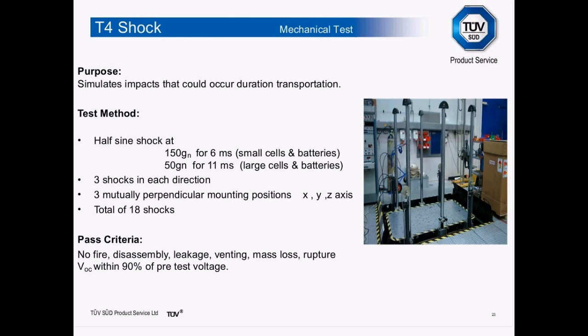The T4 test is the shock test, simulating impacts that could occur during transportation of the cell or battery. This is a half-sine shock at 150 G for 6 milliseconds for small cells and batteries. Three shocks are applied in each direction across three mutually perpendicular mounting positions (X, Y, Z axes), giving a total of 18 shocks per cell or battery. Pass criteria require no fire, disassembly, leakage, venting, mass loss, or rupture, and open circuit voltage within 90% of the pre-test voltage.